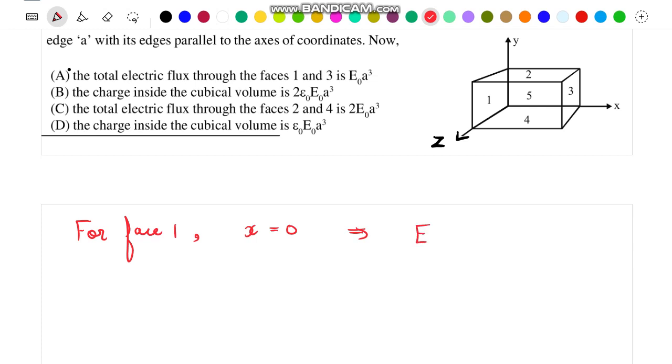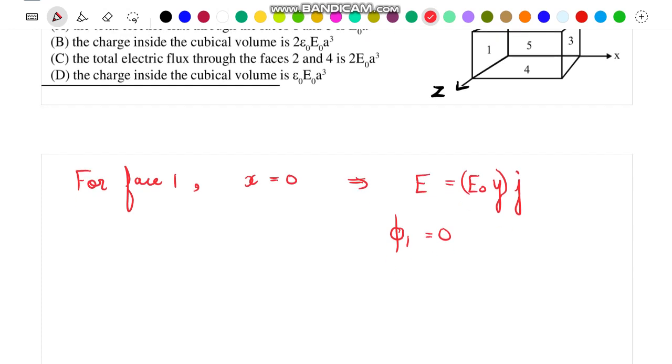Therefore the value of E will be E₀y ĵ. Now this field is in y direction, that is going to graze this surface, so we can say that the net flux of this field through surface 1 is 0. Now let us move our focus to face 3.